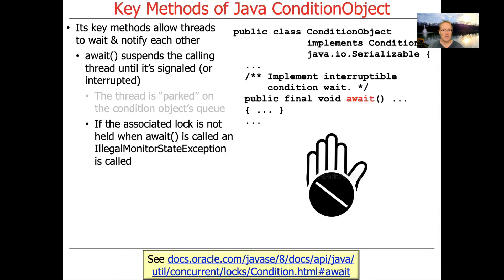So make sure you always acquire the lock before you call await. The easiest way to do that is to follow the idiomatic use of the try-finally block: acquire the lock, go into the try block, check the condition in a loop with the lock held, and then call await if you can't make forward progress because the guard forced you to suspend yourself. Remember the guarded suspension pattern.